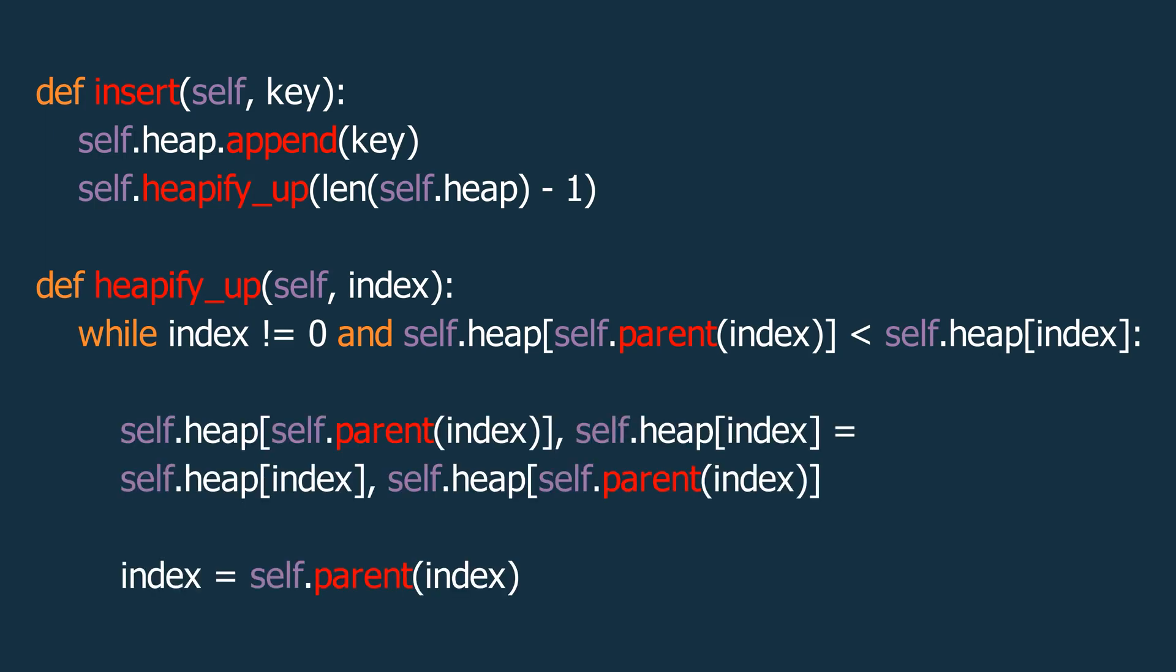Now, let's look at the Python code for the insertion operation. We'll start by defining an insert method that takes the element we want to insert as an input parameter. First, we append this element to the end of the heap array. Then, we perform the heapifyUp operation on this element to ensure it fits into the max heap structure.